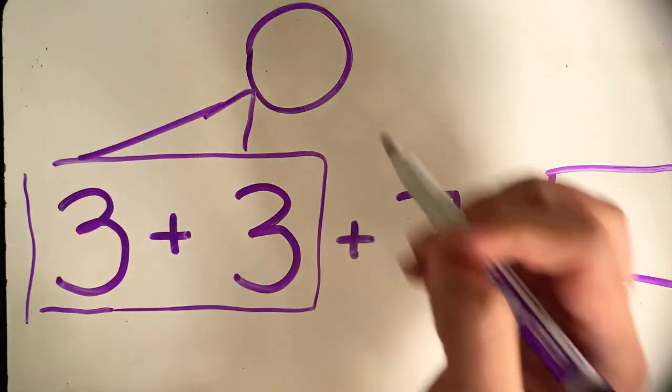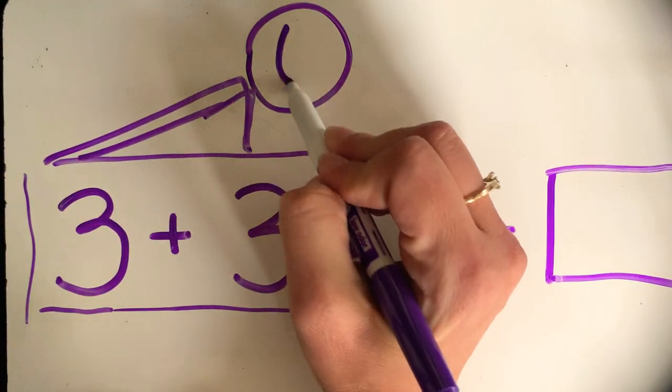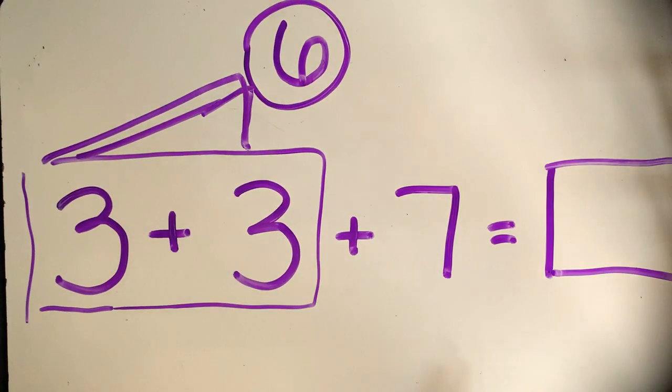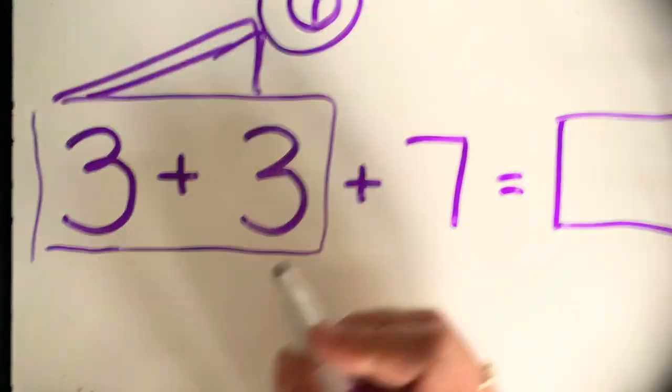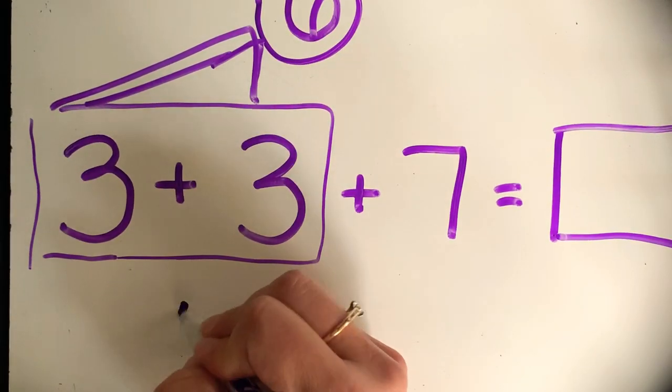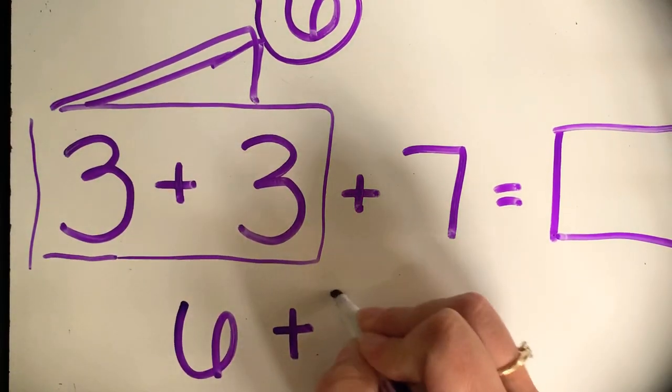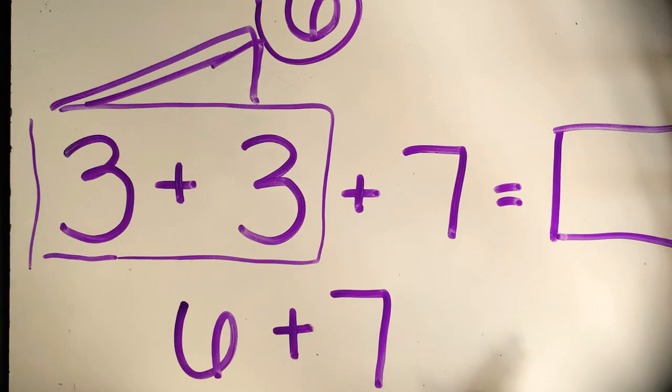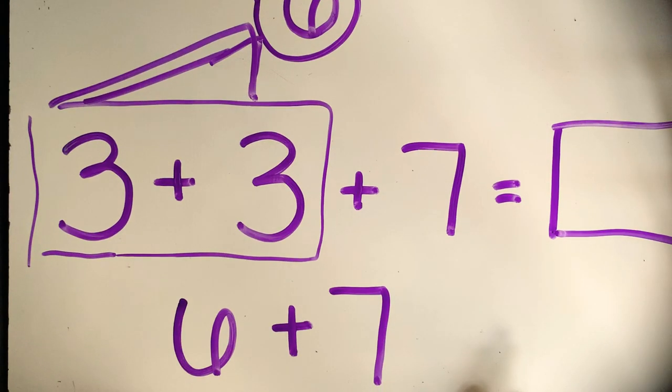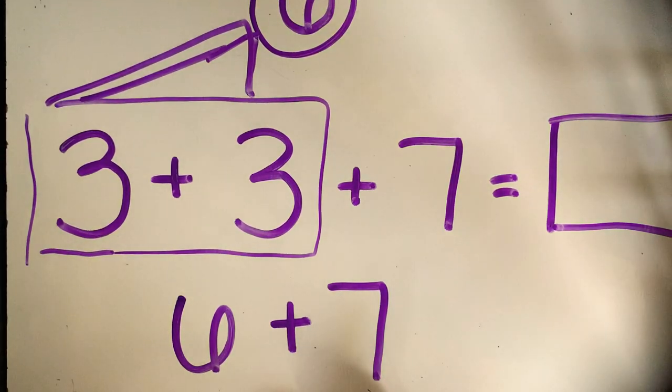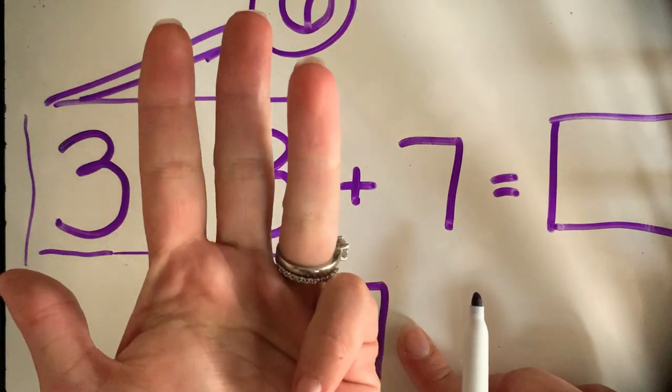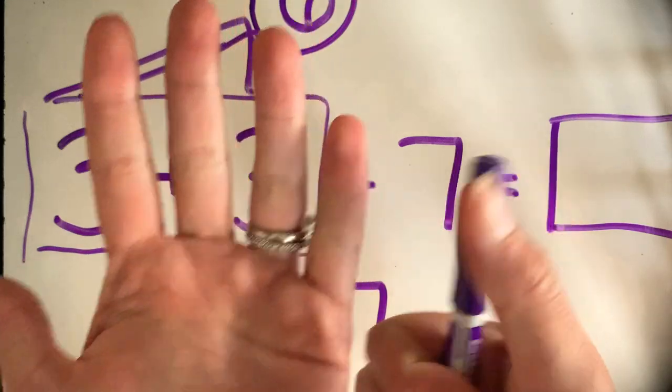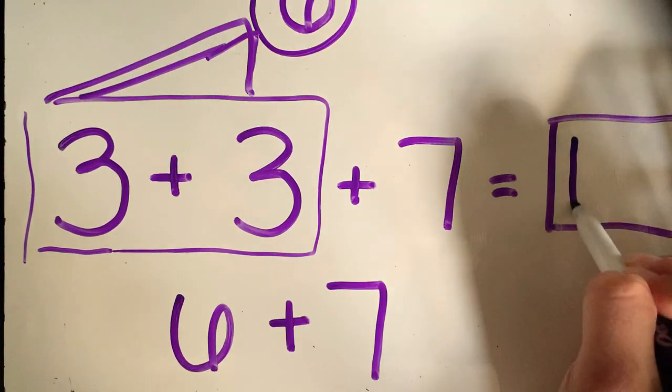So we would take those two numbers and put the number six here. Then we would do six plus seven. That makes the problem a little bit shorter, and we can add in our head the bigger number, seven, and count on: eight, nine, ten, eleven, twelve, thirteen. And our answer is thirteen.